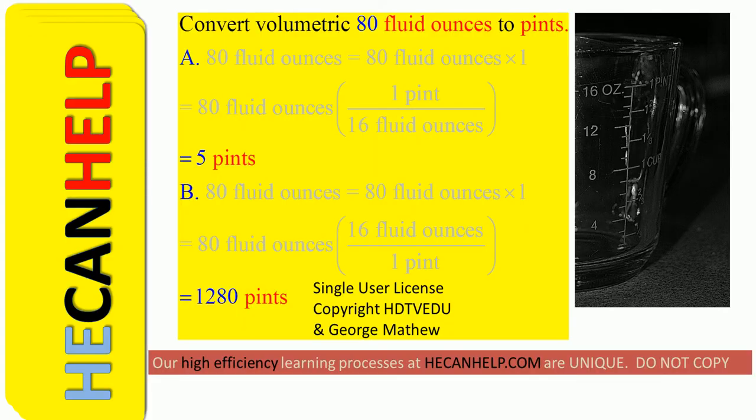Convert volumetric 80 fluid ounces to pints. A, is it 5 pints? Or is it B, 1,280 pints?